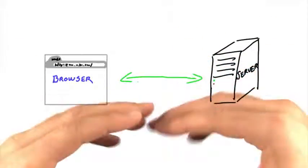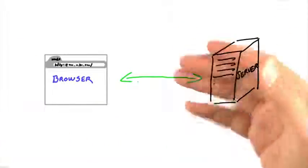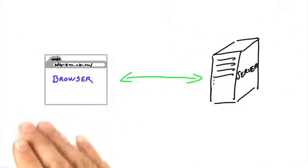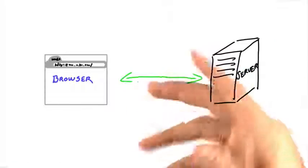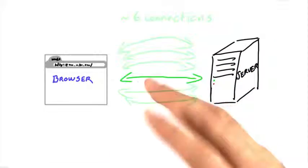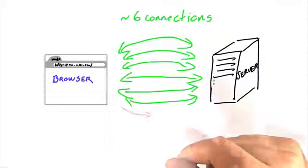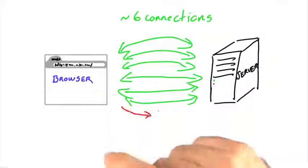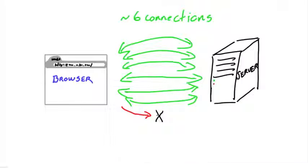Now, it's important to understand that there exists an upper limit on the number of requests that a browser can make to a single server. The browser itself sets this upper limit. Generally, it's about six connections for a modern browser. And when the upper limit is reached, the browser will actually block subsequent requests until an open connection becomes available.